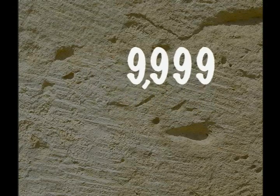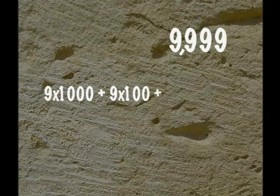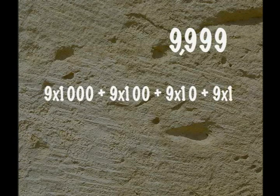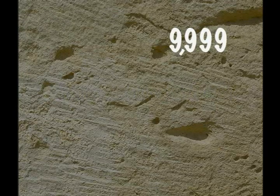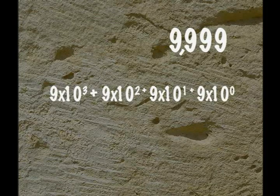To see how this affects the value of the number, we'll need to see these numbers in expanded notation. In a base 10 system, every number can be written as a power of 10. For example, the number 9999 in expanded notation is: 9 times 1000 plus 9 times 100 plus 9 times 10 plus 9 times 1, which expressed as powers of 10 gives us 9 times 10 to the third plus 9 times 10 to the second plus 9 times 10 to the first plus 9 times 10 to the zero.